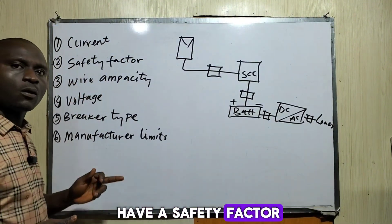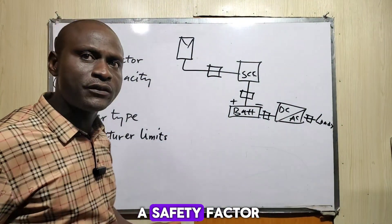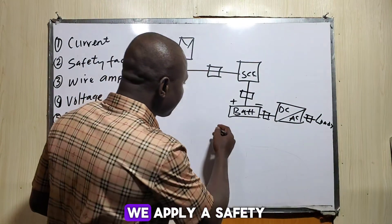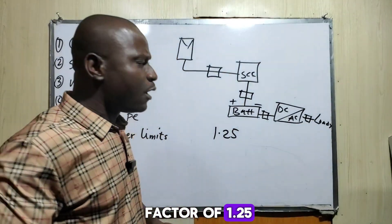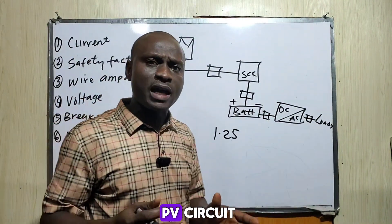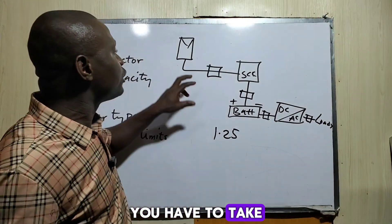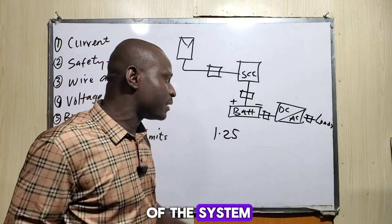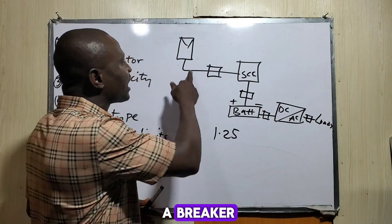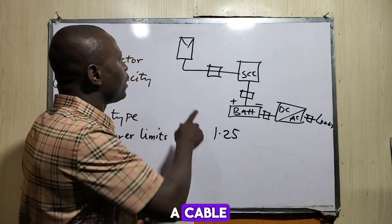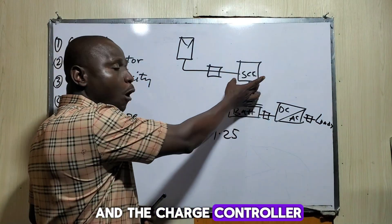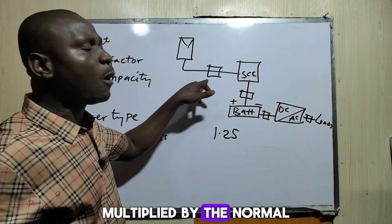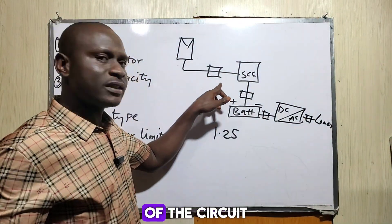Number two, we have a safety factor. We need to apply a safety factor. When choosing a breaker or a cable, we apply a safety factor of 1.25. But when sizing a PV system, you have to take into consideration the PV source side and the inverter side. When sizing a breaker, fuse, or cable between the solar panel and the charge controller or hybrid inverter, you take 1.25 multiplied by the normal operating current of the circuit.